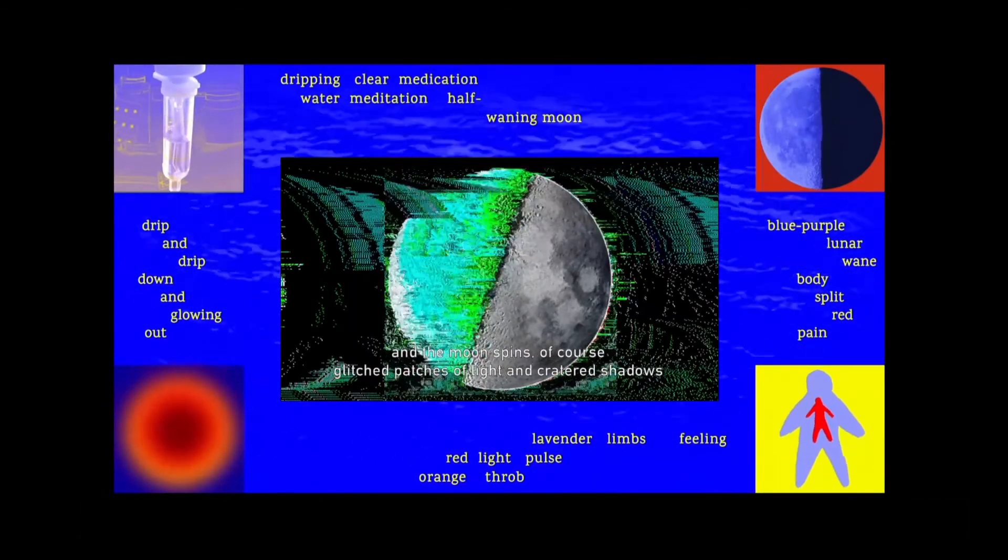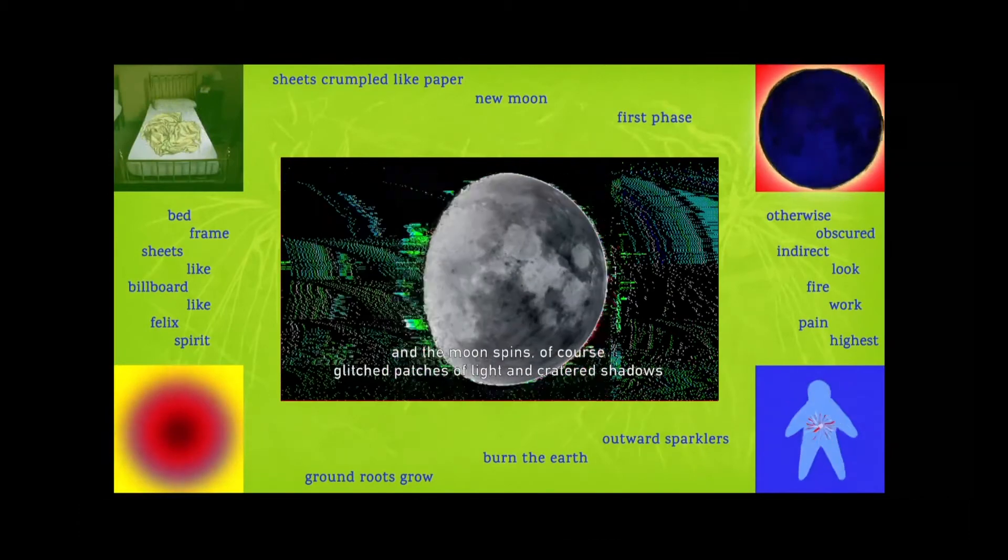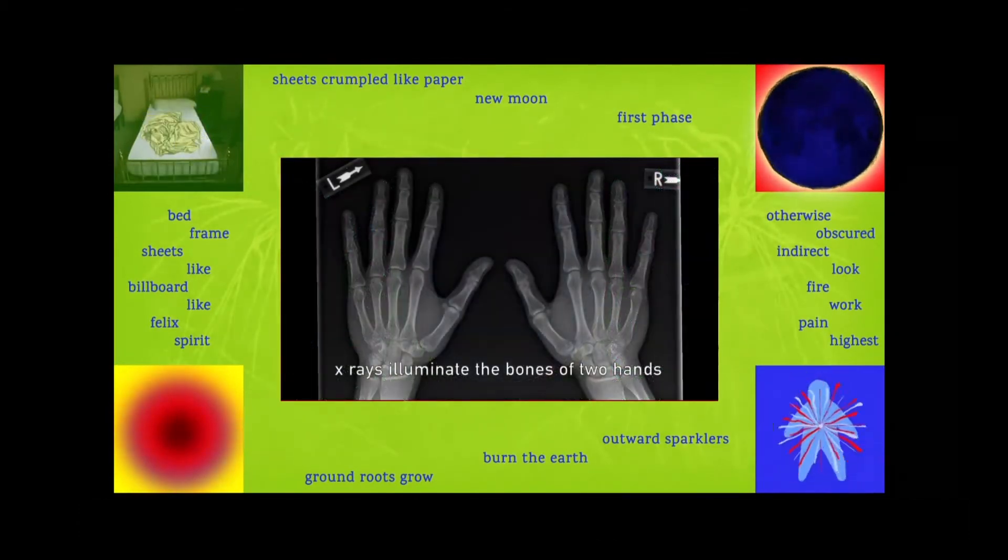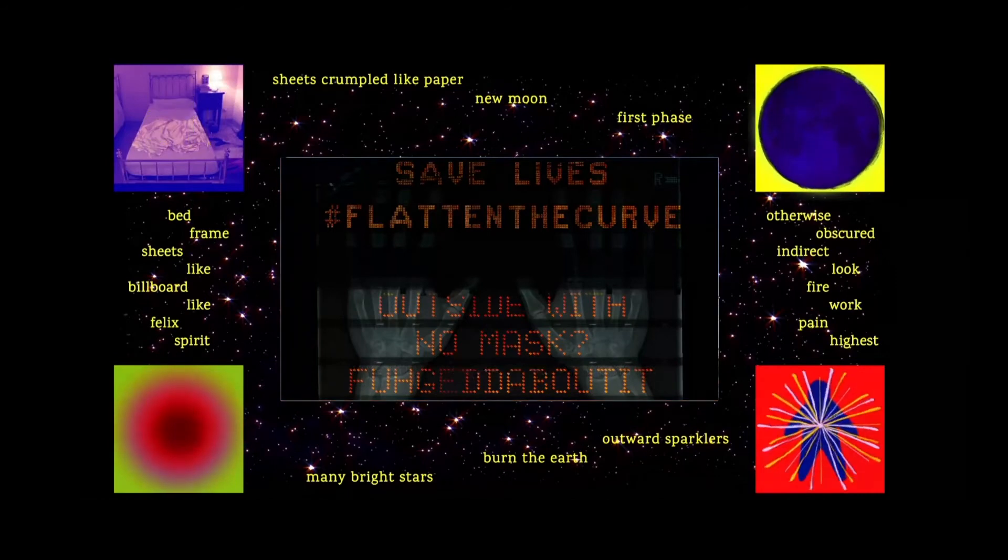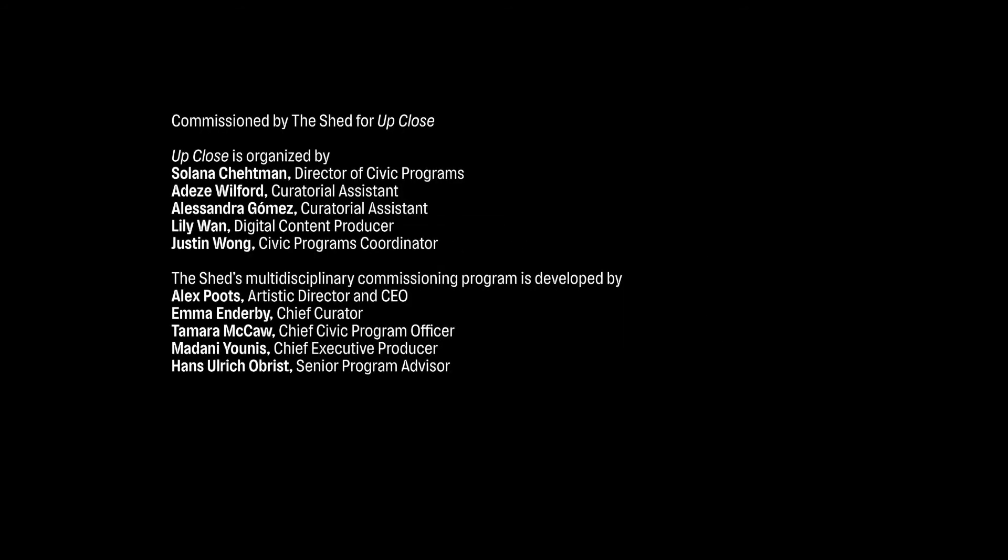And the moon spins, of course. Glitched patches of light and cratered shadows. X-rays illuminate the bones of two hands. Signs read, Save lives, hashtag, flatten the curve. Outside with no mask, forget about it. Quarantine for 14 days. Words burning orange. Two hands, nods and joints, make an okay, okay.